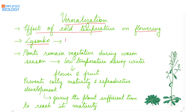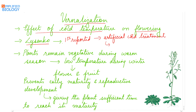Lysenko gave artificial cold treatment to wheat seedlings. He showed that when artificial cold treatment is given to wheat seedlings, the plant flowers and fruits in the same season.